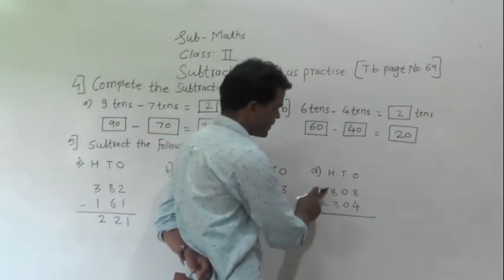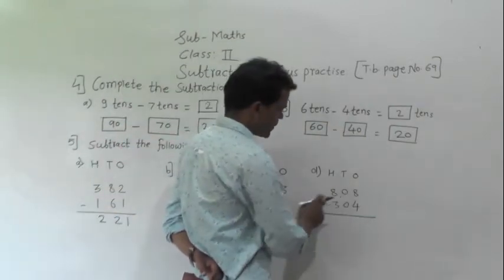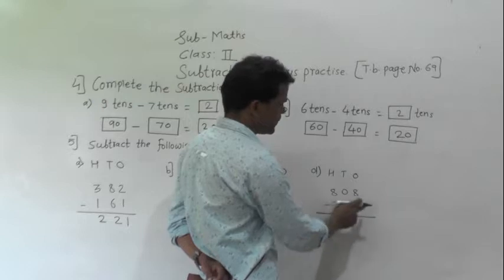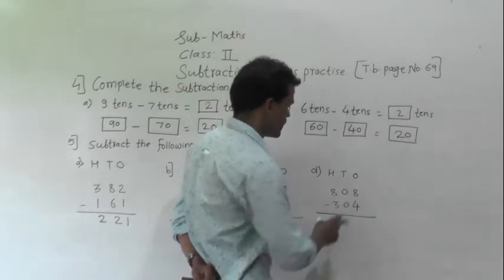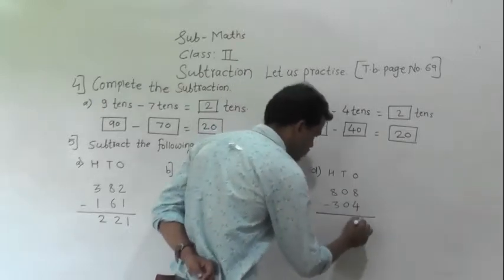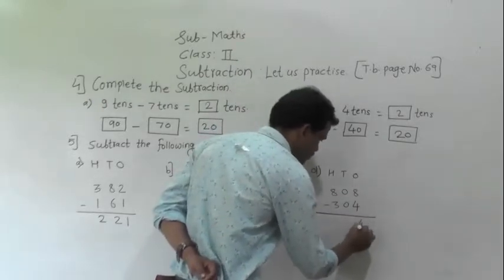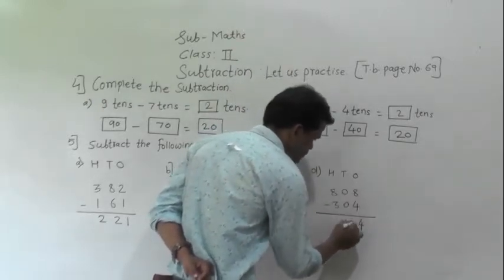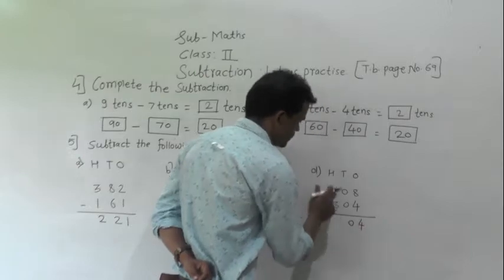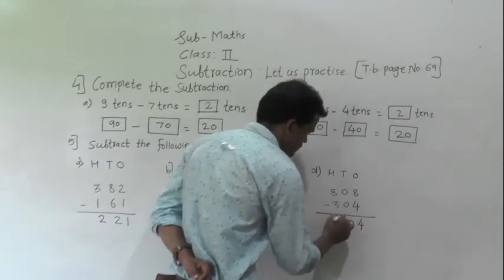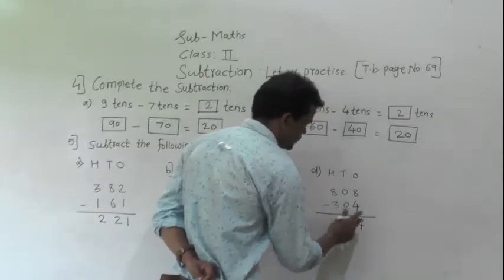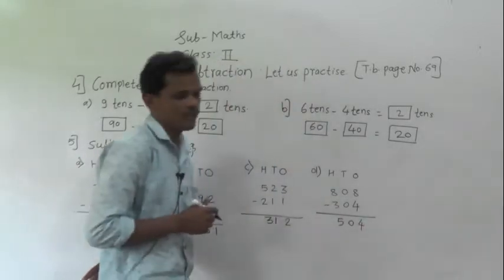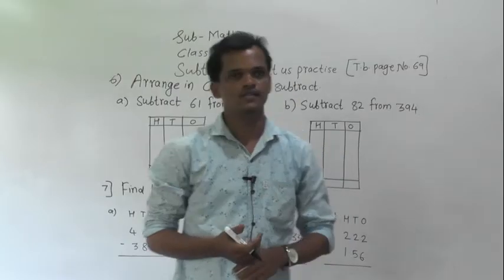Next: 808 minus 304. 8 minus 4 is 4, 0 minus 0 is 0, 8 minus 3 is 5. So 504 is the answer.